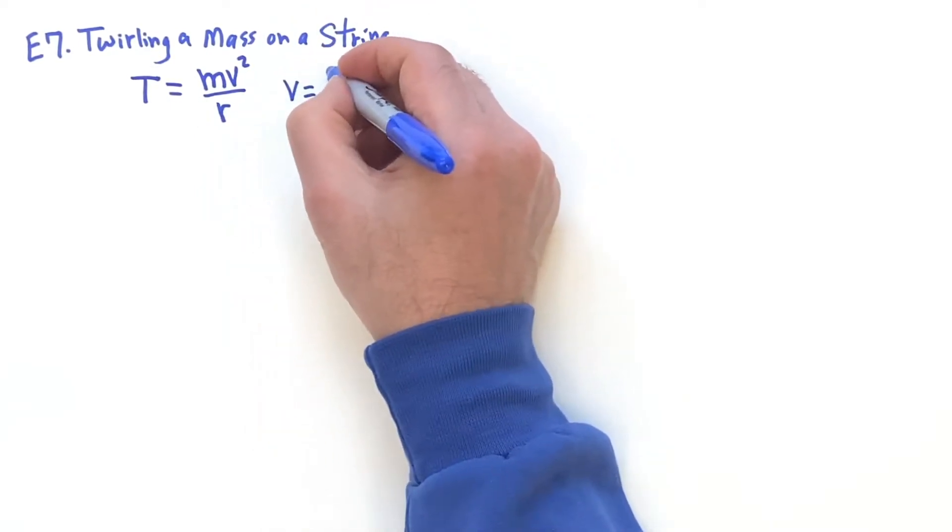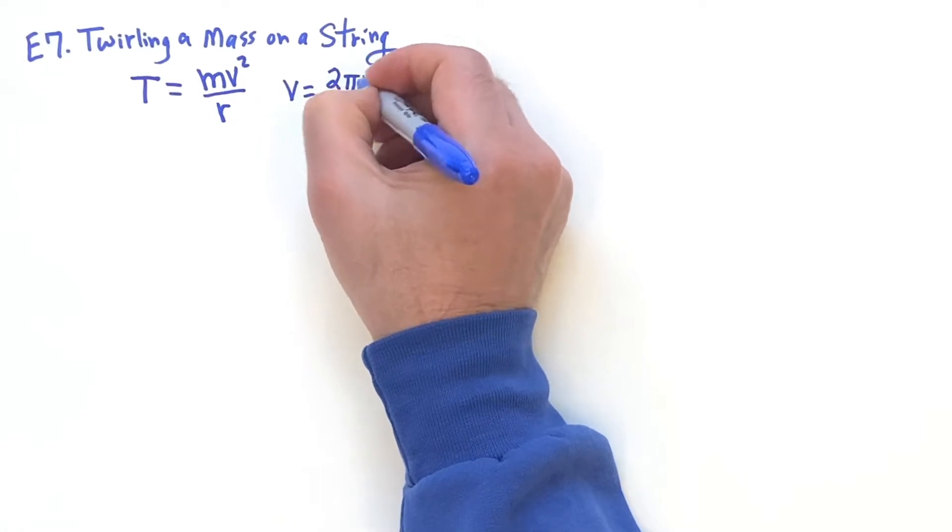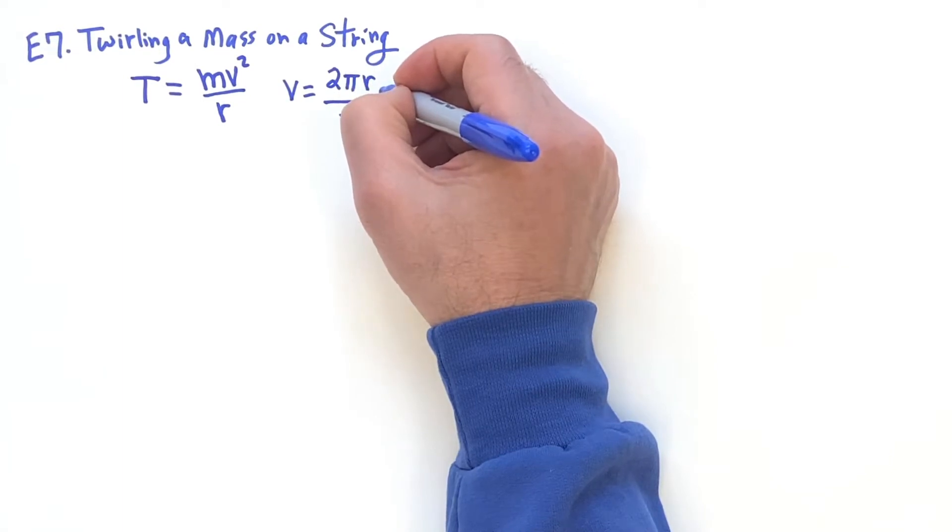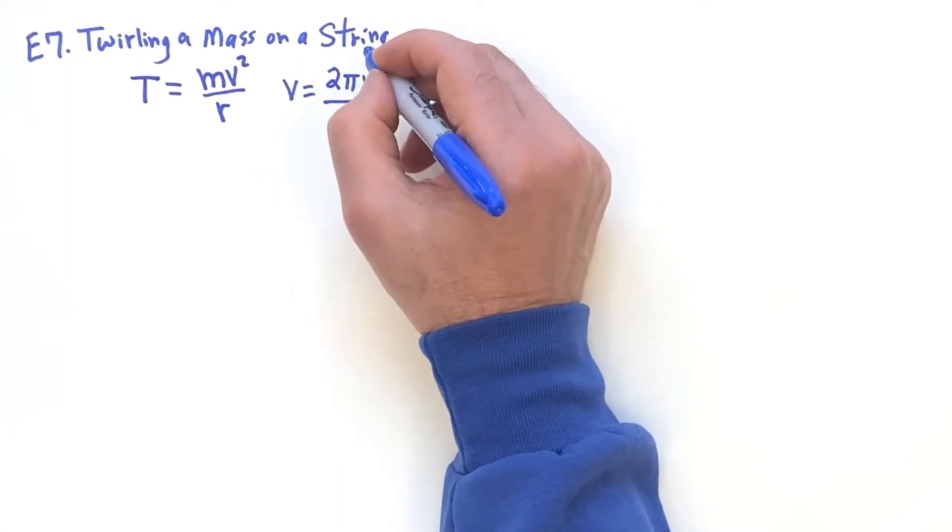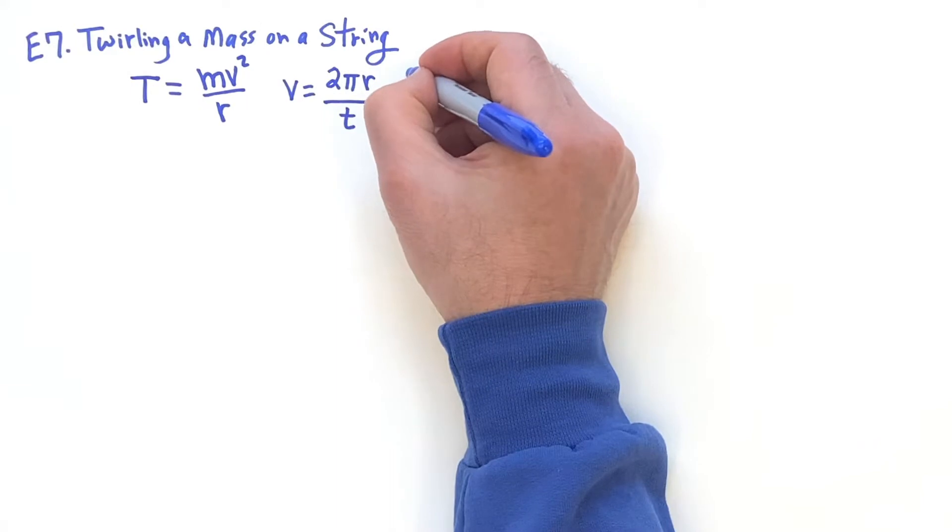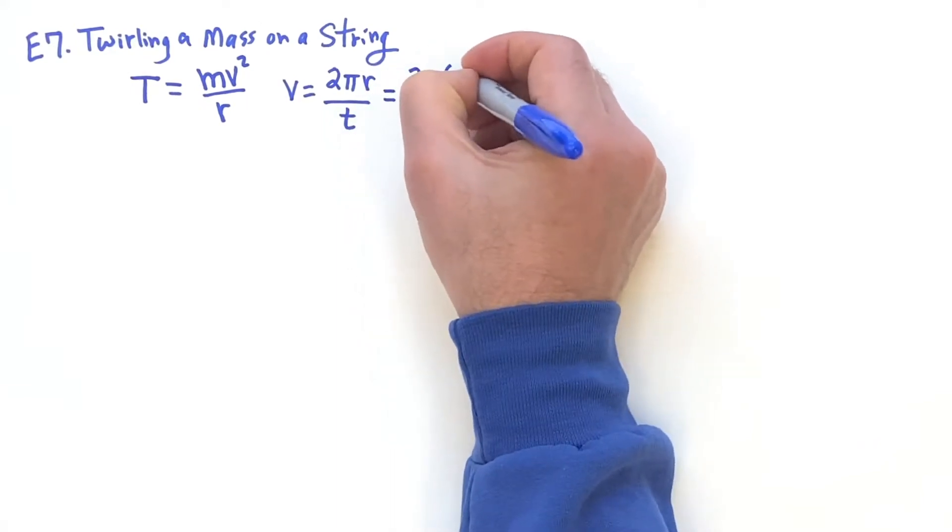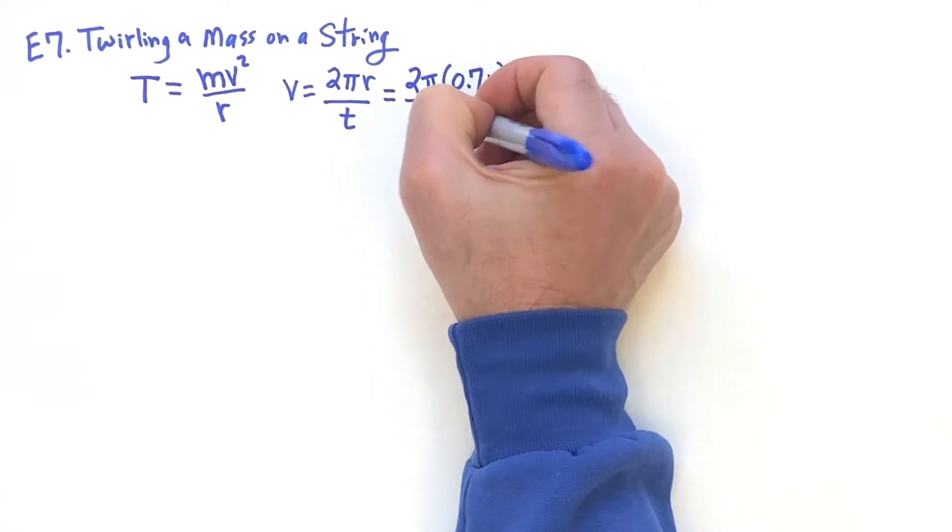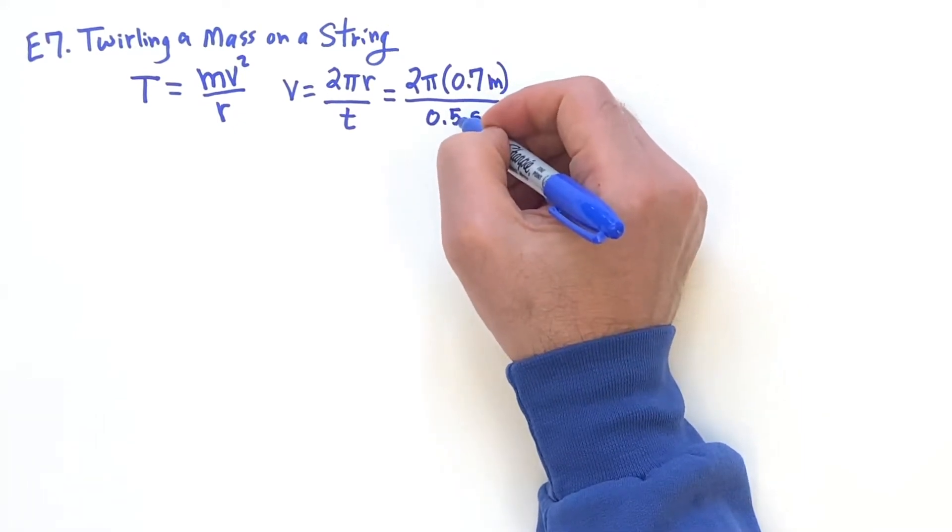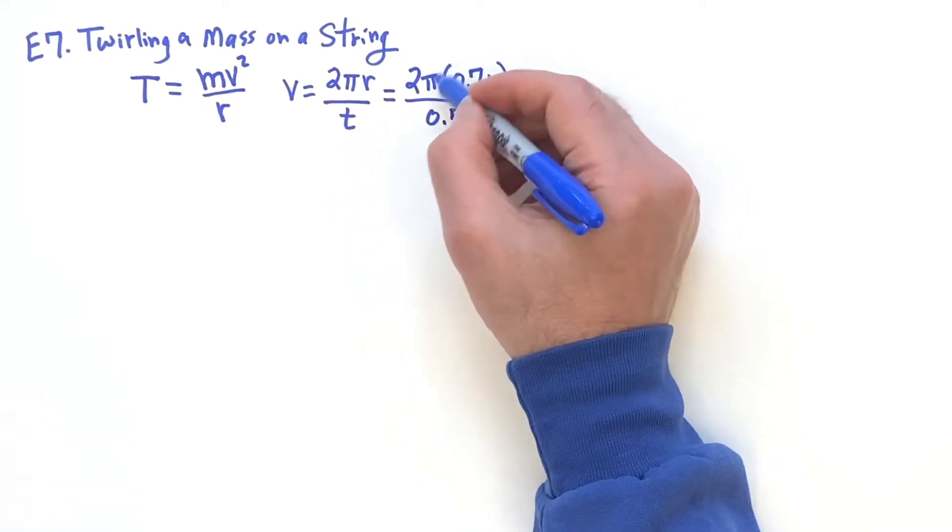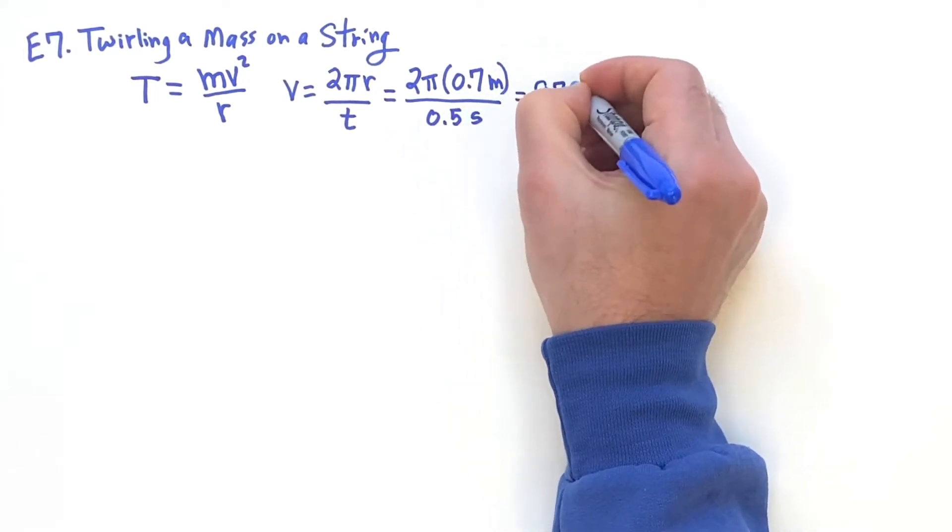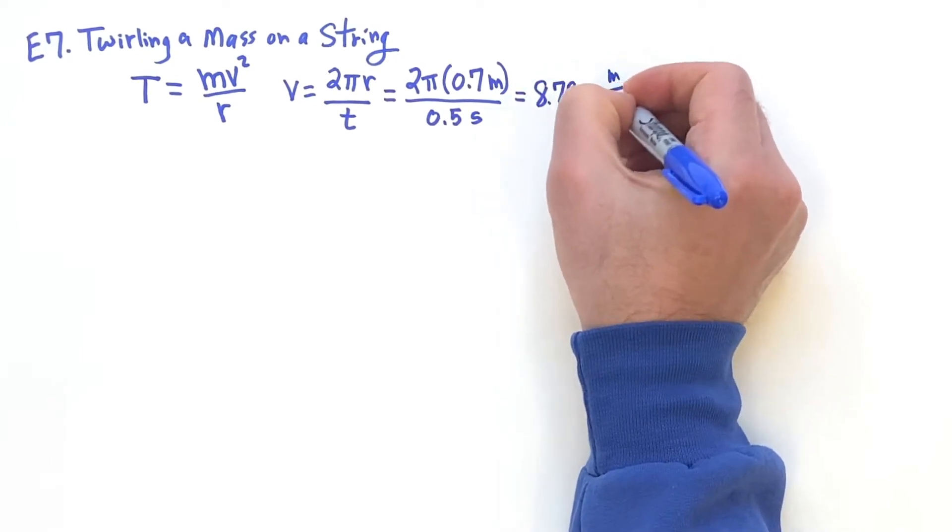And it's given in the problem that here, I've got 2πR over T. In other words, here I'm going to be doing, it said, two circumferences per second. So that means this is going to be 2π times 0.7 meters, and the time's going to be half a second for one of them. Because the problem gave us that you go around twice in one second. So this is one circumference in half a second, and that's 8.7965 meters per second.